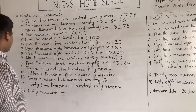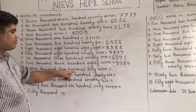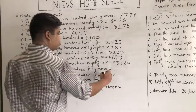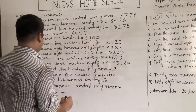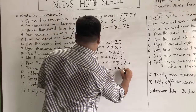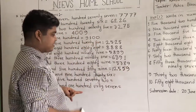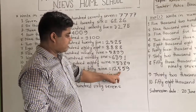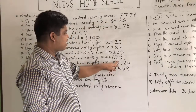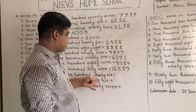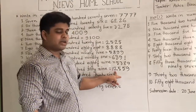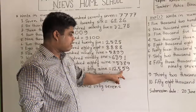Our next number is 12,559. Here 12,000 — so at first we write 12. Then 500, then 59. This is read as 12,559. From 1 to 10 there is a number in the thousands place, but at 11 onwards the number has two places in the thousands. That means 12,559.